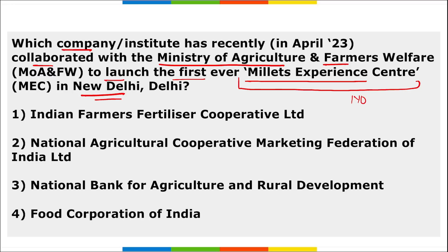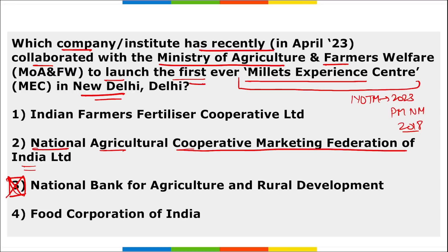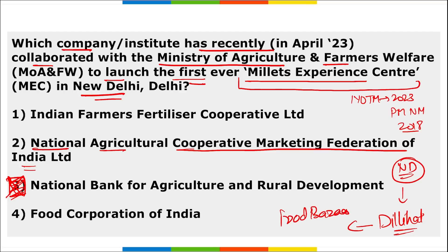The International Year of Millets is 2023, declared by Prime Minister Narendra Modi in 2018. The company that collaborated with the Ministry of Agriculture and Farmers Welfare to launch the first ever Millets Experience Centre is NAFED — the National Agriculture Cooperative Marketing Federation of India. This was held in New Delhi, specifically at Dilli Haat, which is also known as the Food Bazaar of Delhi.